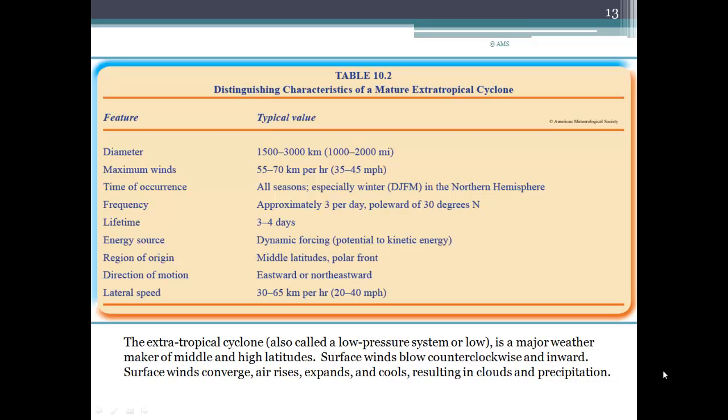They tend to move towards the east, or towards the northeast. And their lateral speed is between 20 and 40 miles per hour. So these extra-tropical cyclones, or just low-pressure systems, or lows, are major weather makers for us here in the United States and everybody in mid-latitudes.